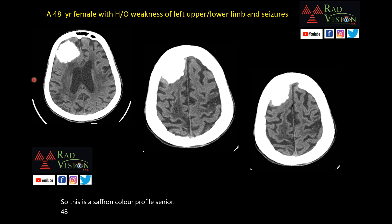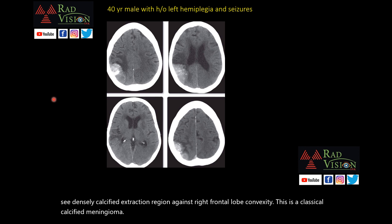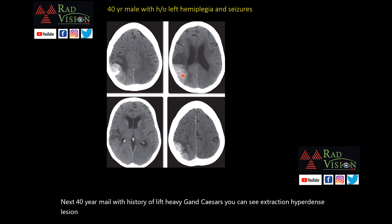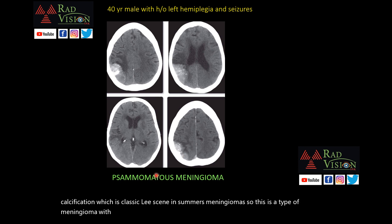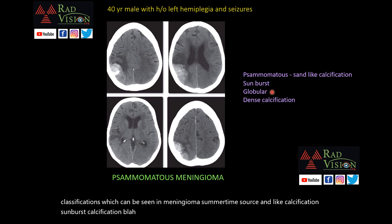A 48-year-old female with weakness of left upper and lower limbs and seizures: there is a densely calcified extra-axial lesion against the right frontal lobe convexity — a classical calcified meningioma. Next, a 40-year-old male with left hemiplegia and seizures: there is an extra-axial hyperdense lesion with multiple sand-like calcifications, classically seen in psammomatous meningiomas. Other types of calcifications in meningiomas include sunburst, globular, and dense calcifications.